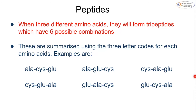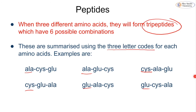When three different amino acids combine we call these tripeptides, and we can have six possible combinations. Rather than drawing out all the structures, we can summarise these using three-letter codes. You're not expected to memorise the three-letter codes — these would be given to you in the question — but it's just a case of putting them in various different orders to get six possible outcomes: starting with alanine, then cysteine, then glutamic acid, giving us six possible combinations for our tripeptides.